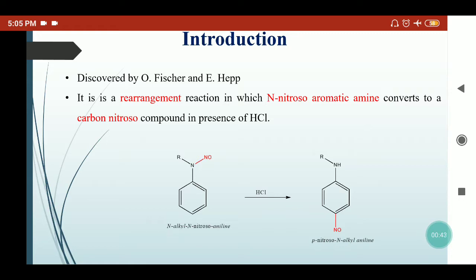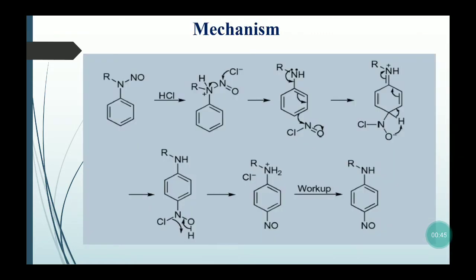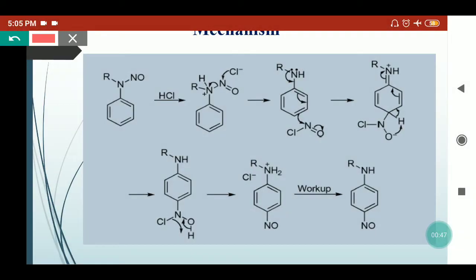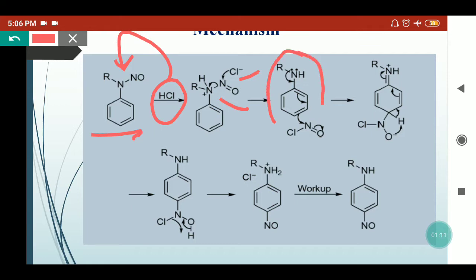Now coming to the mechanism: we have taken N-nitroso aromatic amines, or N-nitroso anilines. In the presence of HCl, the hydrogen ion attacks the nitrogen's lone pair and converts it into a quaternary center. Then the Cl⁻ ion attacks the nitroso group and breaks the nitrogen-nitrogen bond, giving aniline and releasing nitrosyl chloride (NOCl).